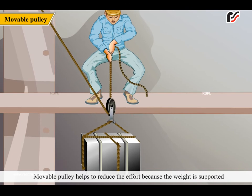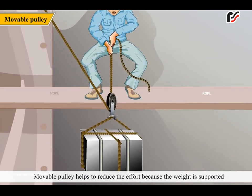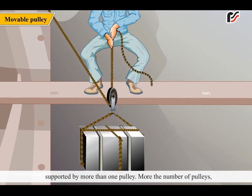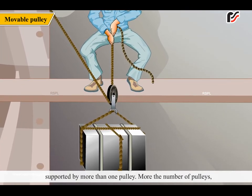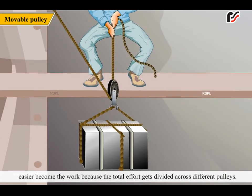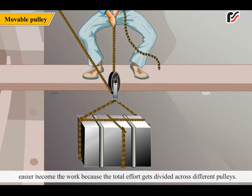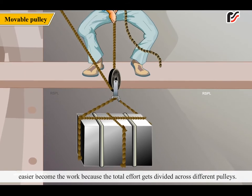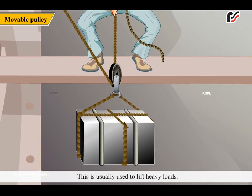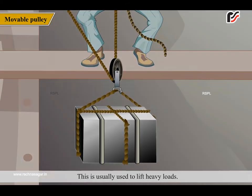A moveable pulley helps to reduce the effort because the weight is supported by more than one pulley. The more the number of pulleys, the easier the work becomes, as the total effort gets divided across different pulleys. This is usually used to lift heavy loads.